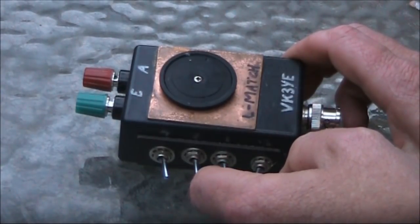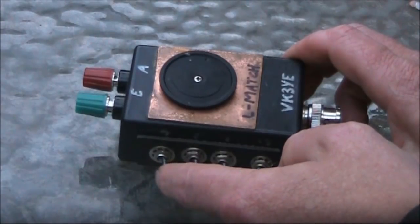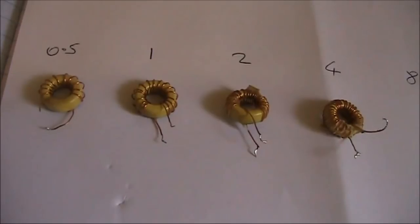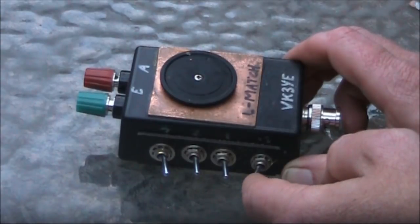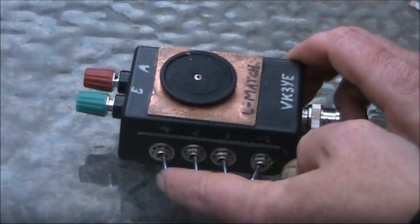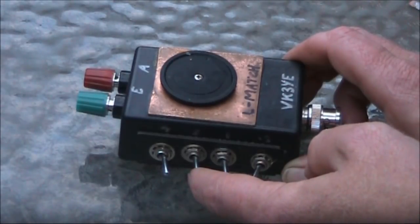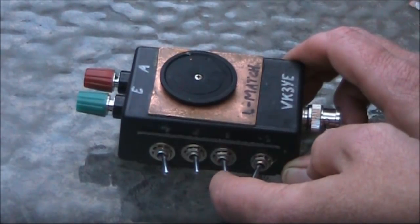That is 0.5, 1, 2, and 4 microhenries. When you do it that way, you have 16 steps of inductance, from 0 to 7.5 microhenries. The steps are 0.5 microhenries apart.